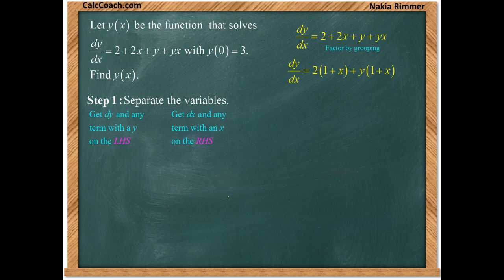The first two terms, we factor out a 2, and we're left with 1 + x. The second two terms, we factor out a y, and we're left with 1 + x.